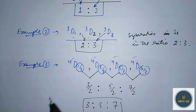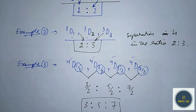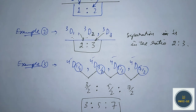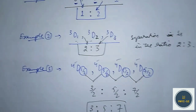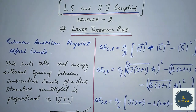We can see that the Lande interval rule is very helpful in theoretically predicting the energy interval spacing between two consecutive levels in the fine structure multiplet — that is, when we apply LS coupling to a multi-electron atom to find the energy spacing between different energy levels. In the next lecture, we will do some very important and interesting problems to understand the Lande interval rule and LS coupling in detail.